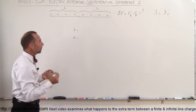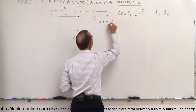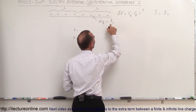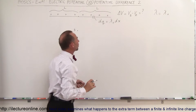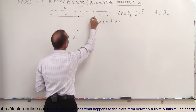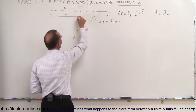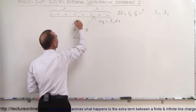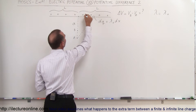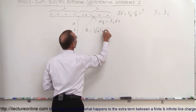To do that, we take a small element dq, where dq equals the linear density lambda sub-naught times the length of that little segment dx. Point A is at distance A from the line charge, and the position along the line is x, with a small increment dx. That means R is simply equal to the square root of A squared plus x squared.